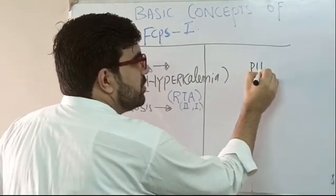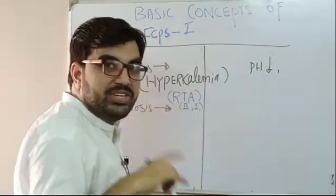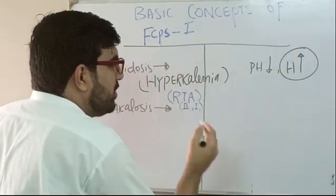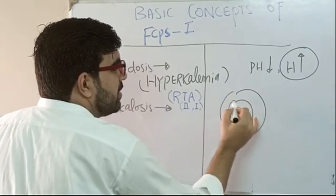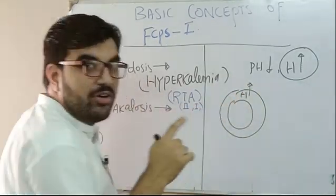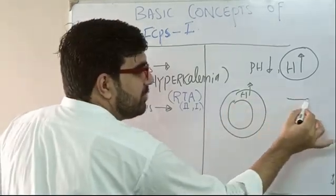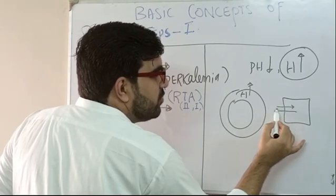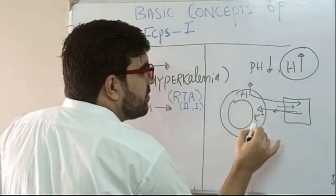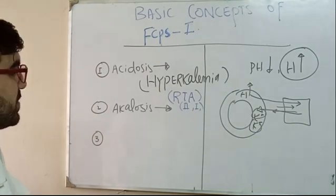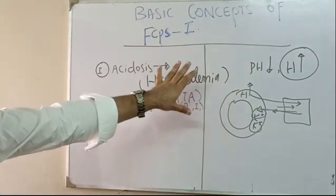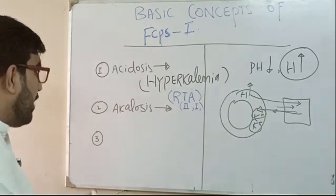How does acidosis cause hyperkalemia? Acidosis means pH is low. pH and hydrogen ion concentration are inversely related — if pH is low, hydrogen ion concentration is more. In the blood, high hydrogen ions are exchanged with the cell: hydrogen ions go inside the cell and potassium comes out. When potassium comes out, it causes hyperkalemia. Renal tubular acidosis is the exception to this rule.